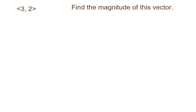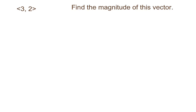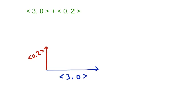So let's take the vector (3, 2). If you remember from our previous work, that is a vector 3 to the right on the x-axis and 2 up in the y direction. If we're going to find the magnitude of the vector, we can separate it into two parts: the vector (3, 0), drawn here as a blue vector.